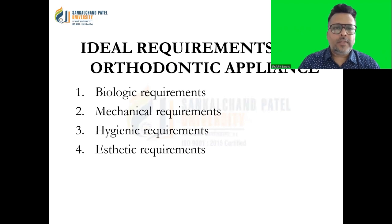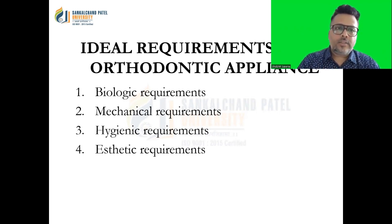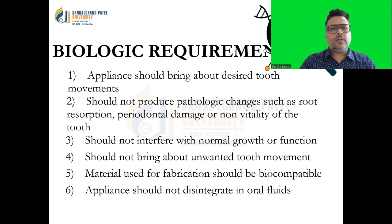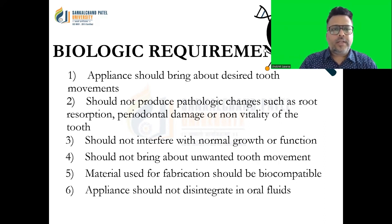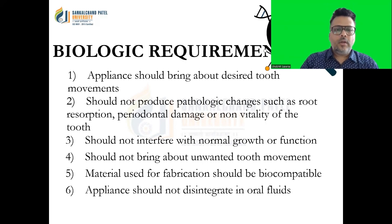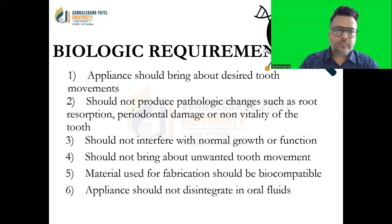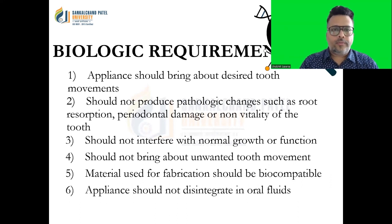The ideal requirements of orthodontic appliances include biological, mechanical, hygienic, and aesthetic requirements. For biological requirements: the appliance should bring about the desired tooth movement and should not produce any pathological changes such as root resorption, periodontal damage, or non-vitality of the tooth. It shouldn't interfere with normal growth or function, and should not bring any unwanted tooth movement. The material used for fabrication should be biocompatible with the oral cavity and surrounding structures. The patient shouldn't have any allergy to it. The appliance shouldn't disintegrate in the oral fluids.